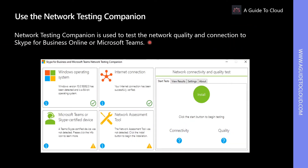The Network Testing Companion provides results for exporting and sharing with other network administrators or partners. The companion also helps discover potential issues related to the organization's network and connectivity to Teams. If you are using Teams now, you can also use this tool to troubleshoot voice quality issues or analyze the network connection before users make a call.